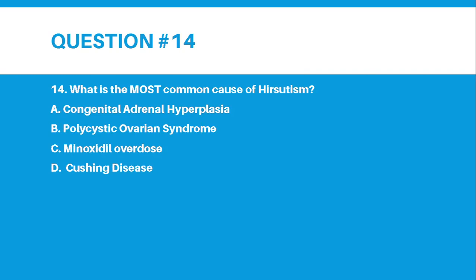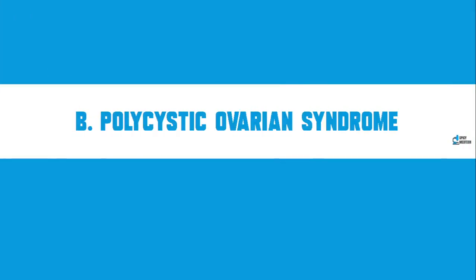Number 14. What is the most common cause of hirsutism? A. Congenital adrenal hyperplasia, B. Polycystic ovarian syndrome, C. Minoxidil overdose, or D. Cushing disease. The correct answer for number 14 is letter B — Polycystic Ovarian Syndrome, or PCOS.